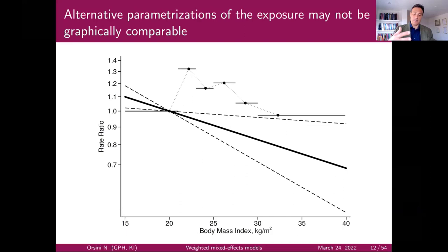You can use a linear function and estimate what is the change in prostate cancer rate for every 5-unit increase of body mass index.